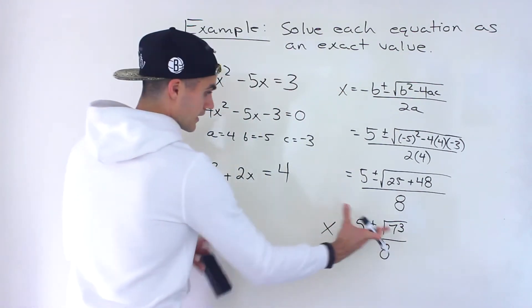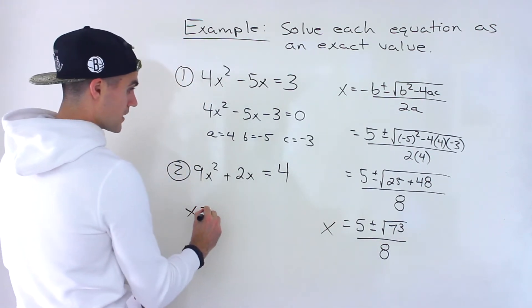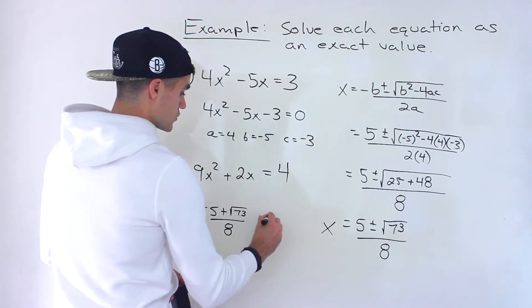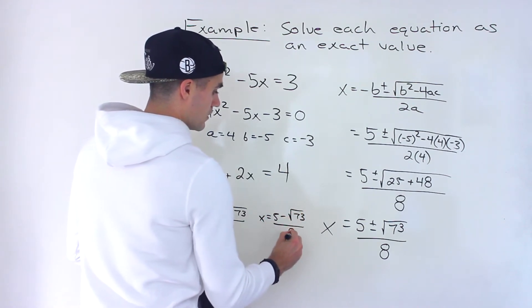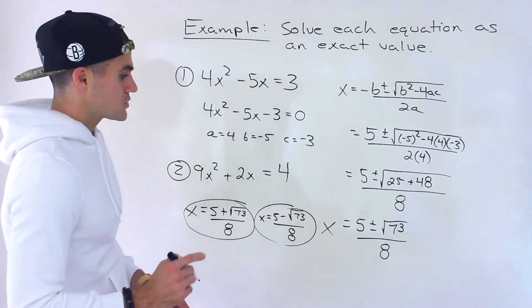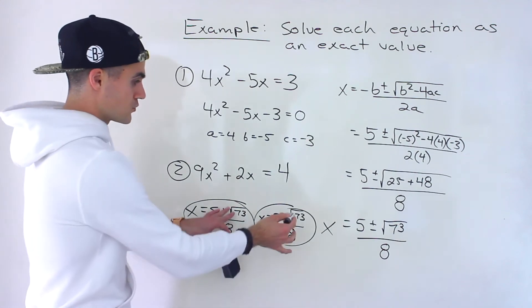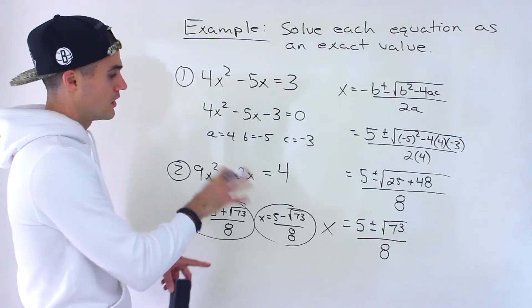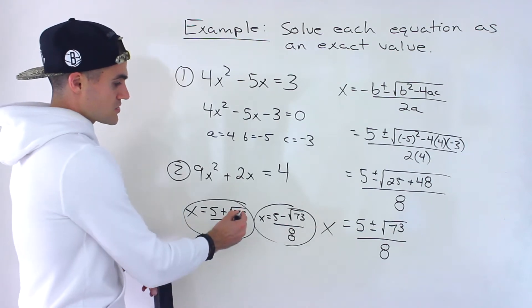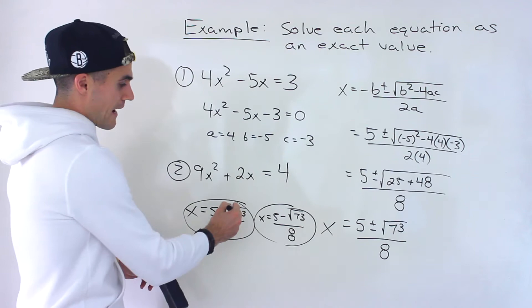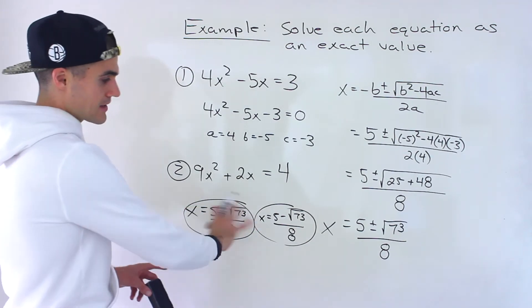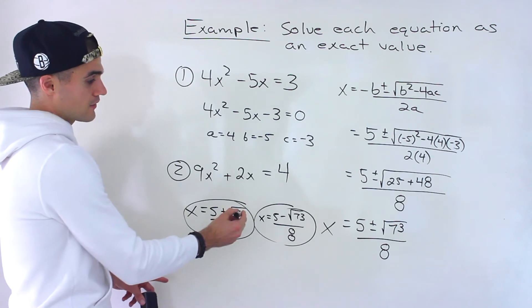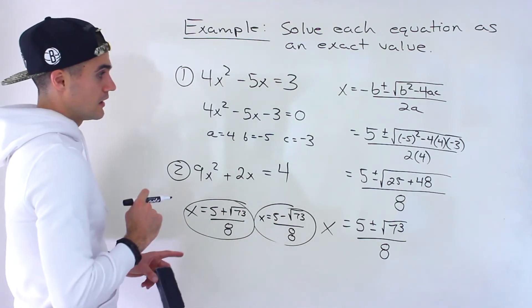And those are the two solutions. We can split the plus or minus into: (5 + √73)/8, and the other solution is (5 - √73)/8. You also want to check if you can simplify further. Root 73 can't be simplified — you can't break it into factors where one would be rootable. So these two answers are the final answers, as exact values with no decimals.